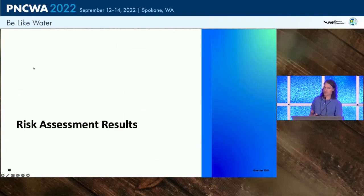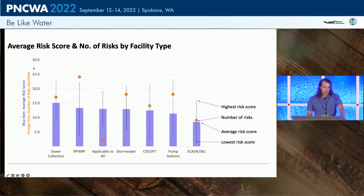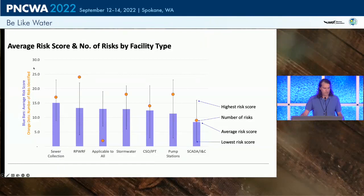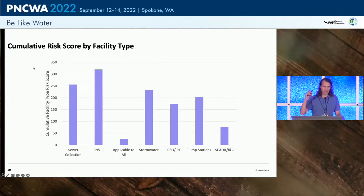Now let's look at some results — starting big picture, then zooming in. This chart presents results based on the category of facility. The blue bar is the average risk score for that facility category. The whiskers at the top and bottom represent the lowest and highest risks for that category, and the orange dot is the number of risks. There's a fairly consistent number of risks for each system — the treatment plant had slightly more. We then took the risk score for all risks identified per facility category and added them together to get a composite risk profile for each system.